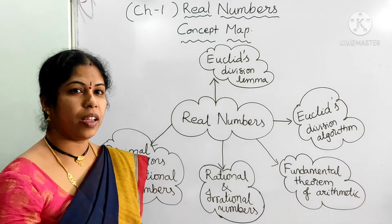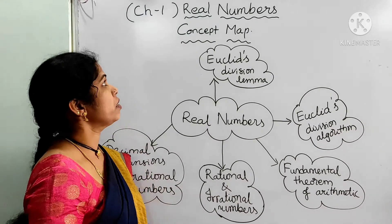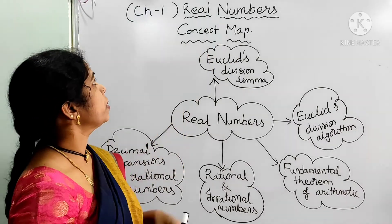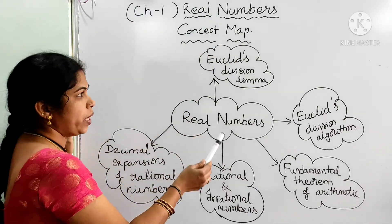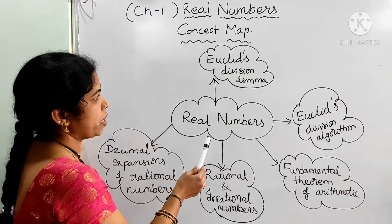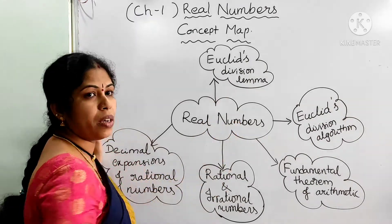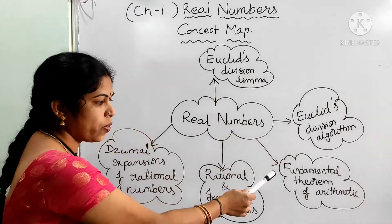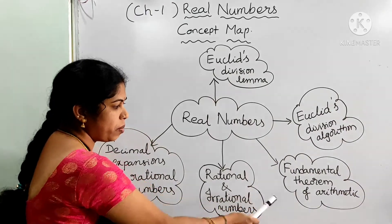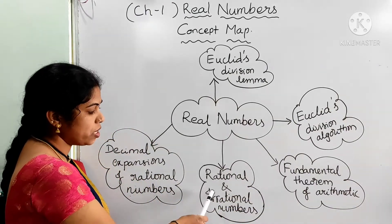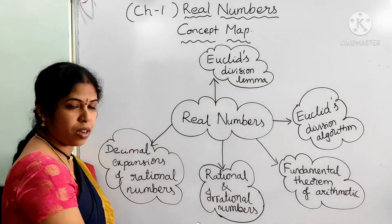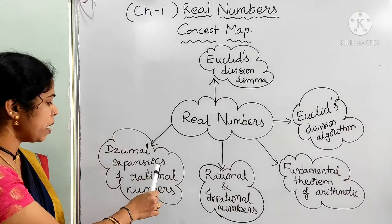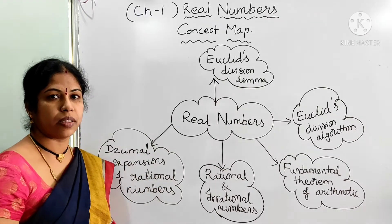Hello children, in our first topic in grade 10, that is real numbers, we have the concepts of Euclid's division lemma, Euclid's division algorithm, fundamental theorem of arithmetic, rational and irrational numbers, and also decimal expansions of rational numbers.